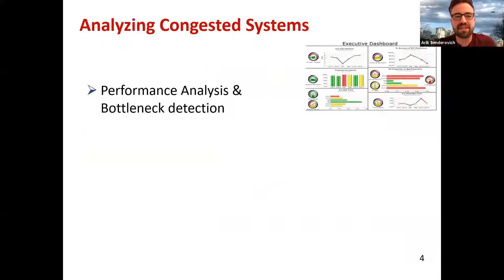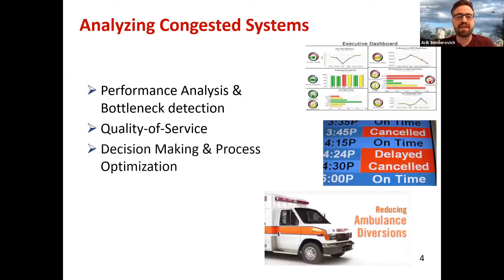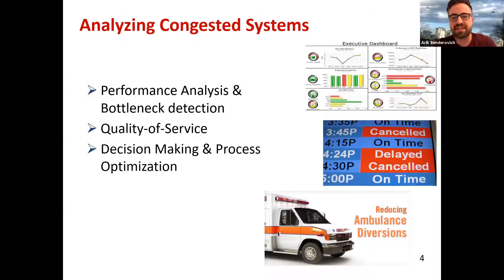What is our motivation for analyzing these systems? First, performance analysis — trying to understand where bottlenecks are, looking at dashboards weekly. Second, giving customers predictions of how long they'll wait, which reduces uncertainty and anxiety — like knowing if your flight is delayed. This impacts quality of service. Finally, we want to make decisions and optimize. We model the system using a queuing model to help managers control it and make better decisions — for example, ambulance diversion: if two of three emergency departments are congested, divert the ambulance to the third.